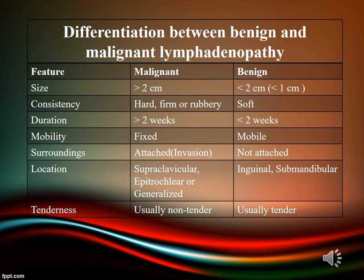If a lymph node is malignant, its size will usually be more than two centimeters, consistency will be hard, firm, or rubbery, duration more than two weeks, it will be fixed and attached to underlying and surrounding structures, location can be supraclavicular, epitrochlear, or generalized, and malignant lymph nodes are usually not tender.